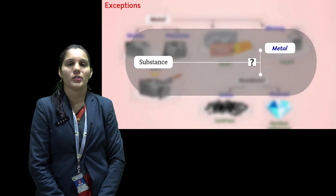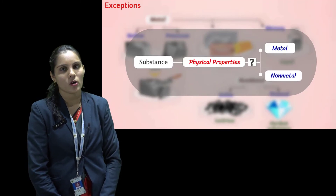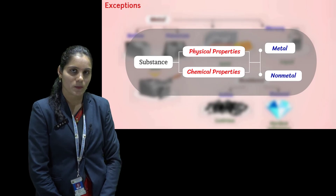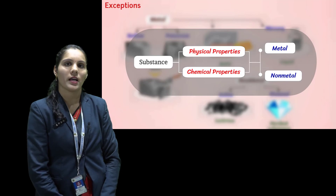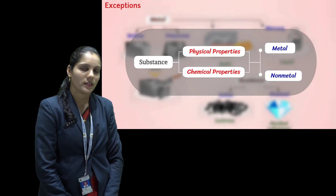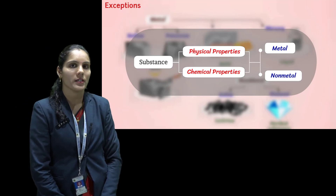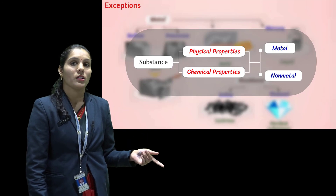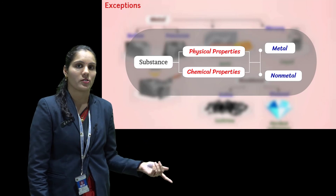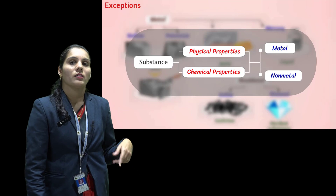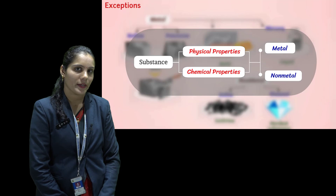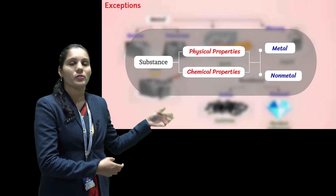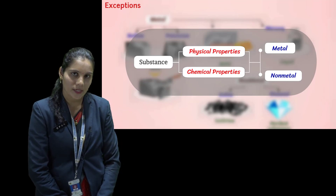From this module, we understand that physical properties alone cannot fully differentiate metals and non-metals. We must also learn their chemical properties. Today we learned: metals are lustrous, hard, malleable, ductile, sonorous, and good conductors of heat and electricity. Non-metals are non-lustrous, soft, non-malleable, non-ductile, non-sonorous, and bad conductors of heat and electricity. In the next module, we will learn about the chemical properties of metals and non-metals. Thank you.